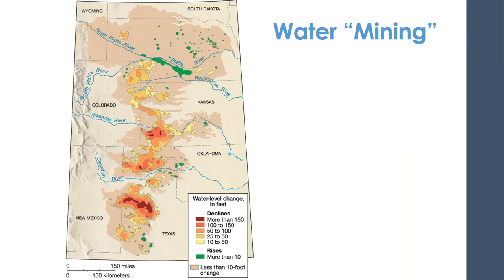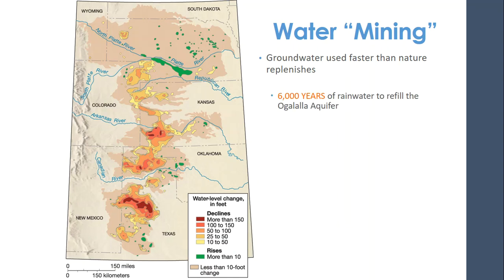We also have a problem called water mining — we are using groundwater much faster than nature can replenish it. Like a bank account, we are drawing it out faster than our paycheck is putting it back in. The Ogallala aquifer would need 6,000 years of rain to refill. There are places where we are dramatically depleting it — sometimes more than 150 feet below what it used to be. It's not an endless water supply; we are pulling it out, irrigating with it, it evaporates, and winds up somewhere else.